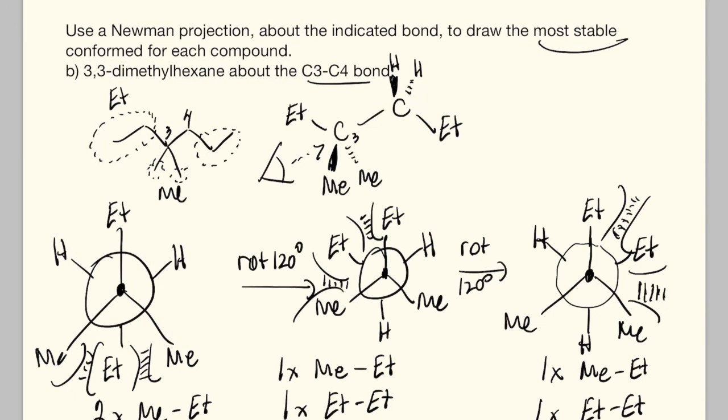So what do we do? Remember the smaller groups have smaller steric strain potentially. Another way of saying that is bigger is badder. Here we have two relatively small methyl groups clashing into ethyl groups. Here we have an ethyl-ethyl, so that's not good. And here we have an ethyl-ethyl, that's not good. So this still has significant strain to it, but it has the least amount. We're going to highlight this.